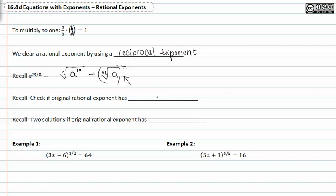Here's how we can check: to see if the rational exponent has even roots, look in the denominator. To see if there are two solutions, check if the original rational exponent has even exponents in the numerator.